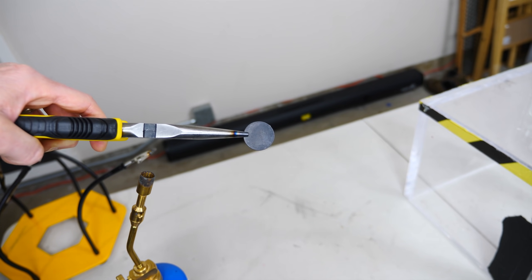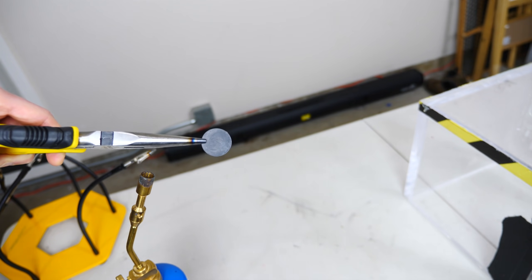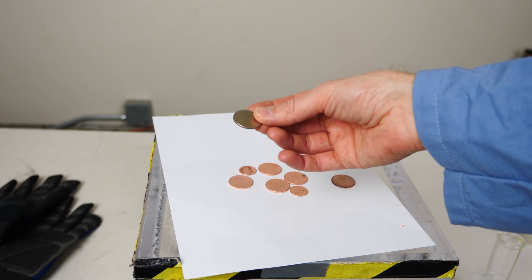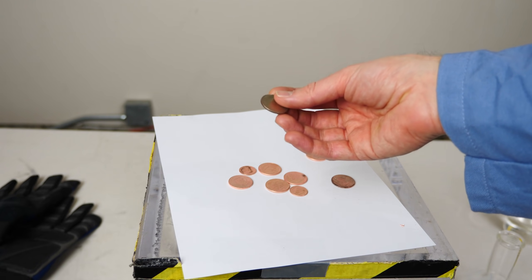So once the copper migrates to the top of the coin, now it just reacts with the oxygen in the air and it turns black. So after you heated it, if you just left it, you just have a black coin because now there's just copper oxides on the top.